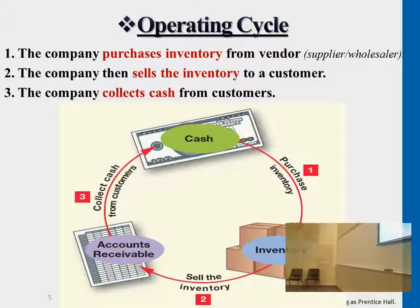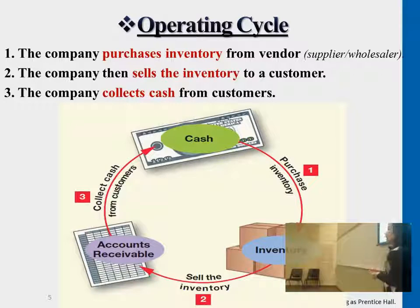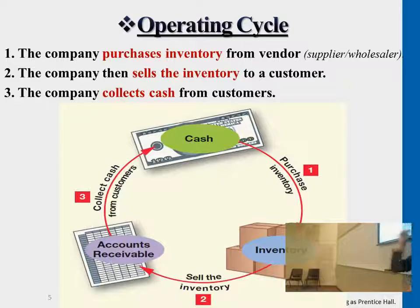After selling the inventory, a company either collects cash or accounts receivable. If it's accounts receivable, then later on — within a month or so — the company will be collecting cash based on those. Then the company will purchase more inventory, mark up the price, sell it to a customer, and get cash again. This is the general operating cycle.